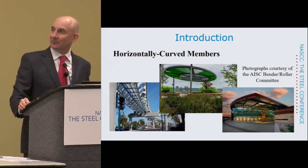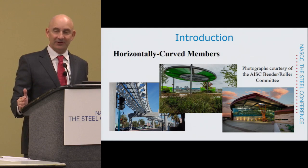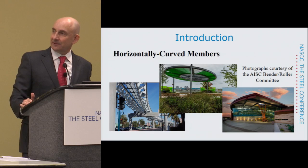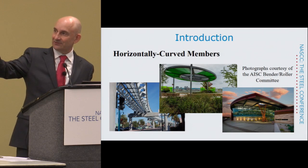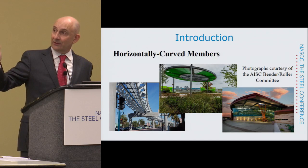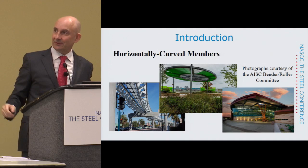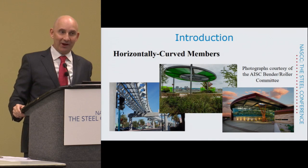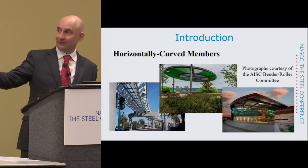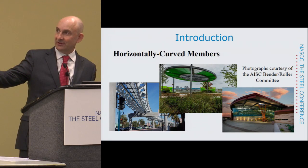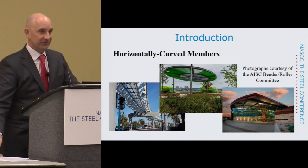The UFO-looking one in the middle is probably not carrying much load — likely just a sunscreen or canopy. The reason I can tell is it's a full 360 degrees with only three spans, so it's got a pretty wide span, and significant load would produce visible deformations. Also note that the curved members are HSS sections — the reason being the torsional stiffness of an HSS.